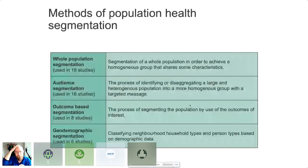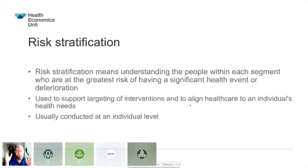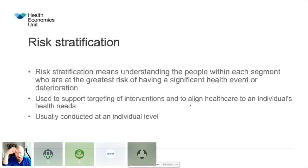On to risk stratification. We now know how to potentially box people up. But within those boxes, what we want to understand is people's risk of moving from box to box, or potentially of getting a negative outcome. Risk stratification is the understanding of where within the segment the greatest risk of having a significant health event or a deterioration lies. We want to look at those to target interventions and align healthcare to that individual's need. This is always done at individual level.